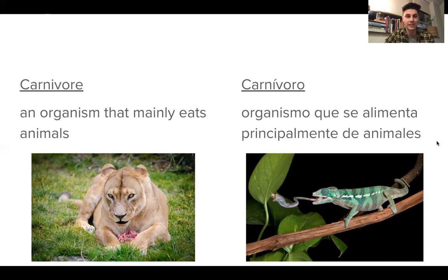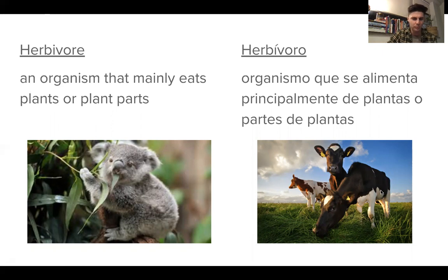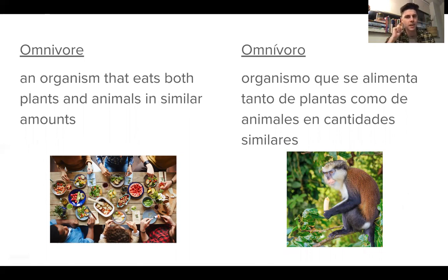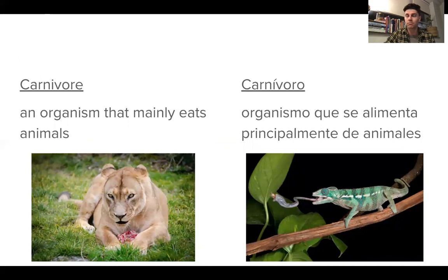Now we have types of living things. A carnivore is an organism that mainly eats other animals for its food, like a chameleon or a lion. An herbivore is the opposite — an organism that mainly eats plants or parts of plants for its food, like a koala or cows. An omnivore, like many human beings and some other organisms, eats both plants and animals in similar amounts. A question to think about: are all humans omnivores? Can humans be herbivores or carnivores? Something to consider.